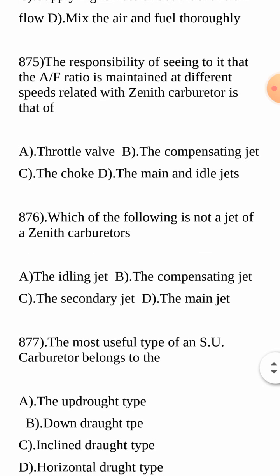Next question: The responsibility of maintaining the air-fuel ratio at different speeds in a Zenith carburetor — is it the throttle valve, the compensating jet, the choke, or the main and idle jet? There are 3 jets in a Zenith carburetor: number 1 compensating, number 2 main, and number 3 idle jets. The answer is: this function belongs to the compensating jet.